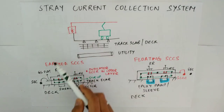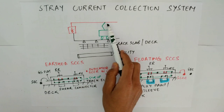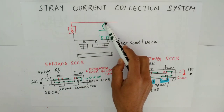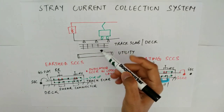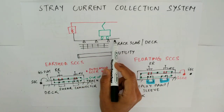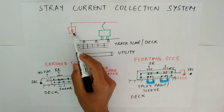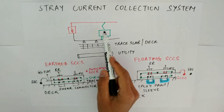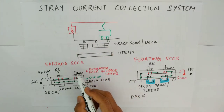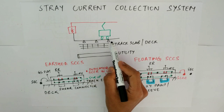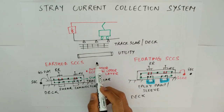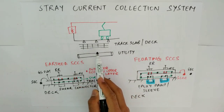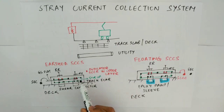This is your traction substation and this is your third rail or catenary from where the rolling stock is getting supply. These are your running rails and your return system, which consists of the return cables and return conductors. This is your fastening system, the rail fastening system, your track slab and deck reinforcements, and this is your utility pipeline.